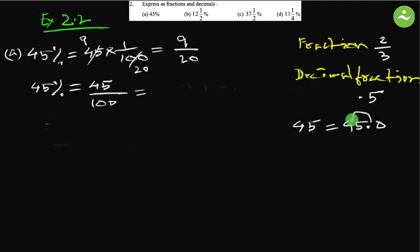So decimal point will move one digit and then another digit. For each zero it will shift one digit left, so it will become 0.45.